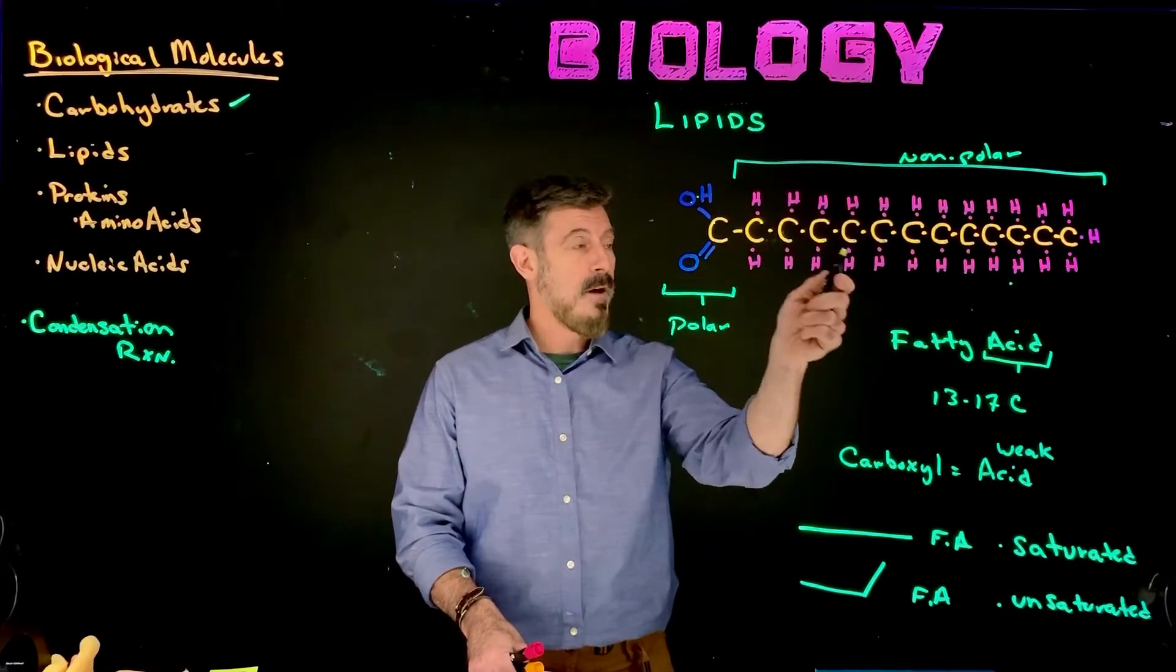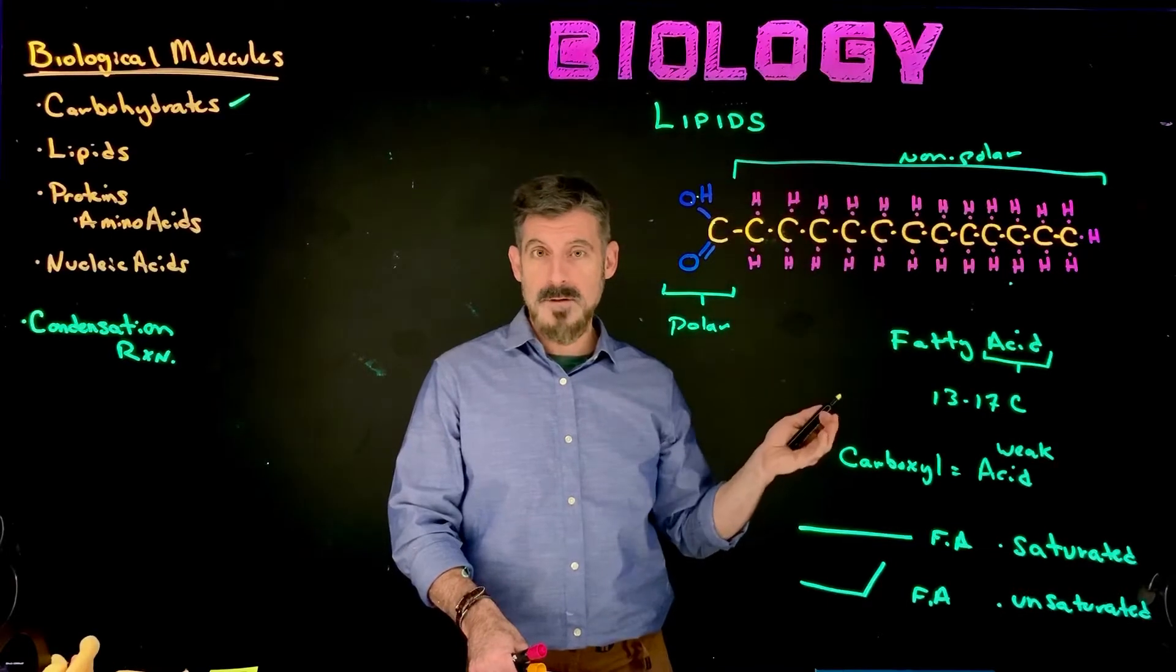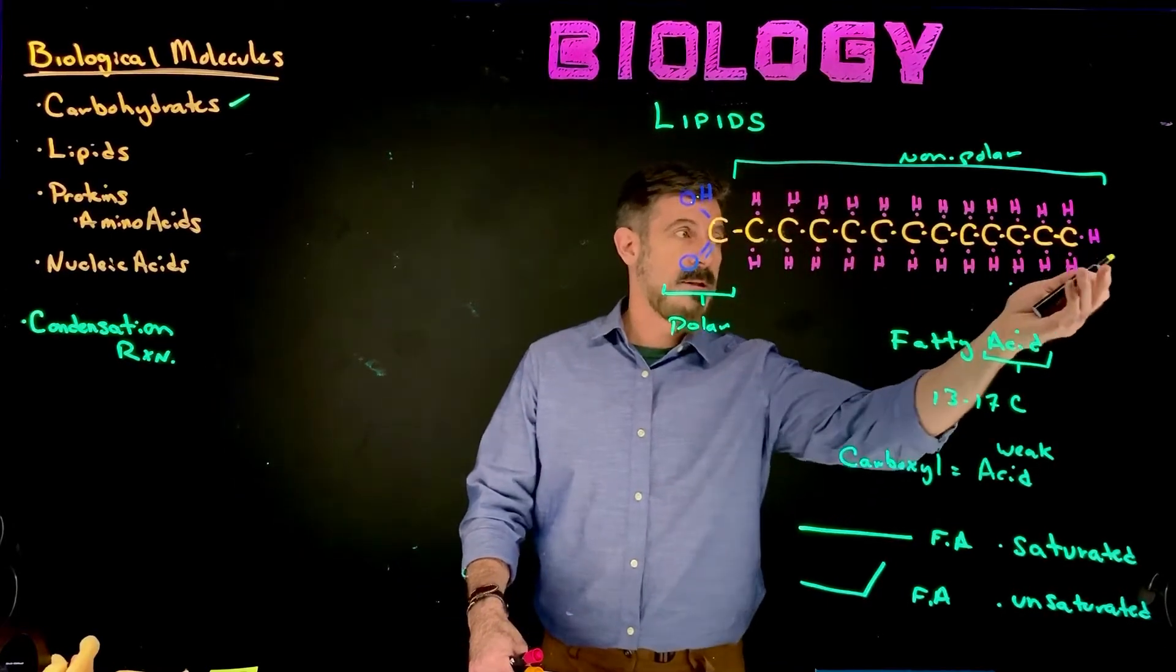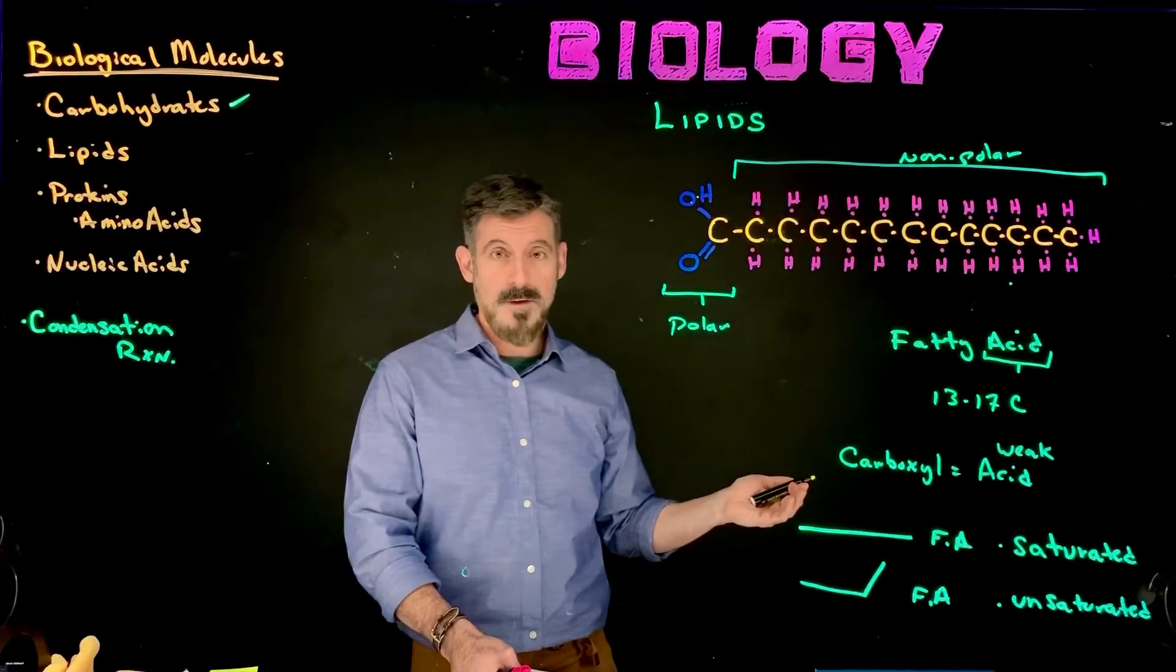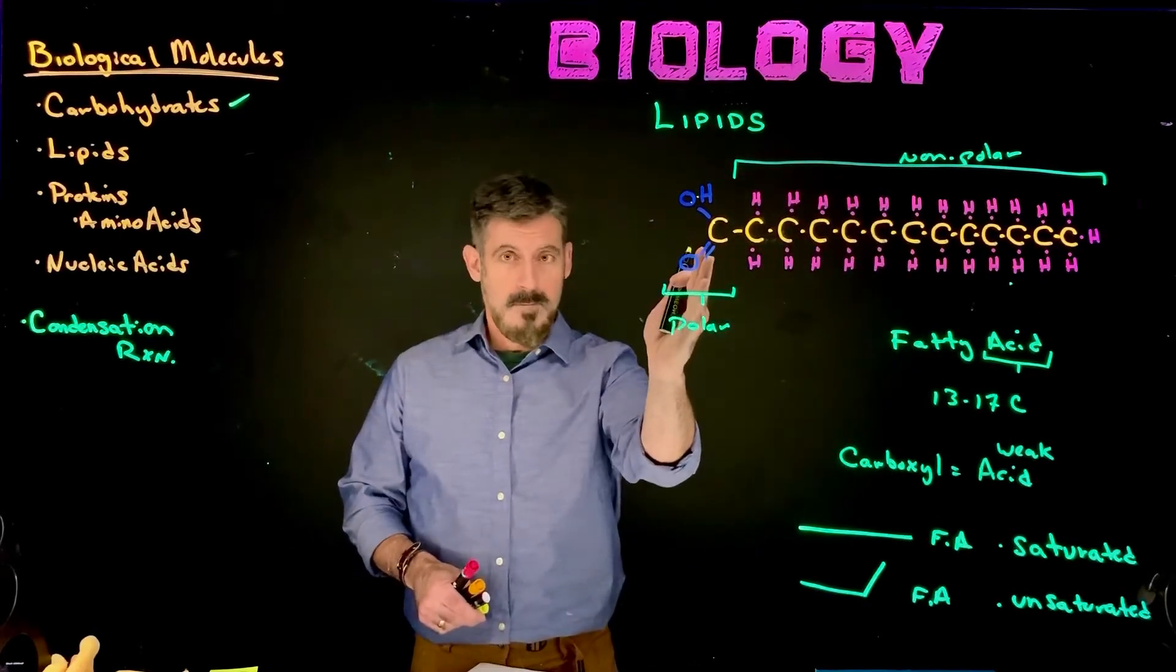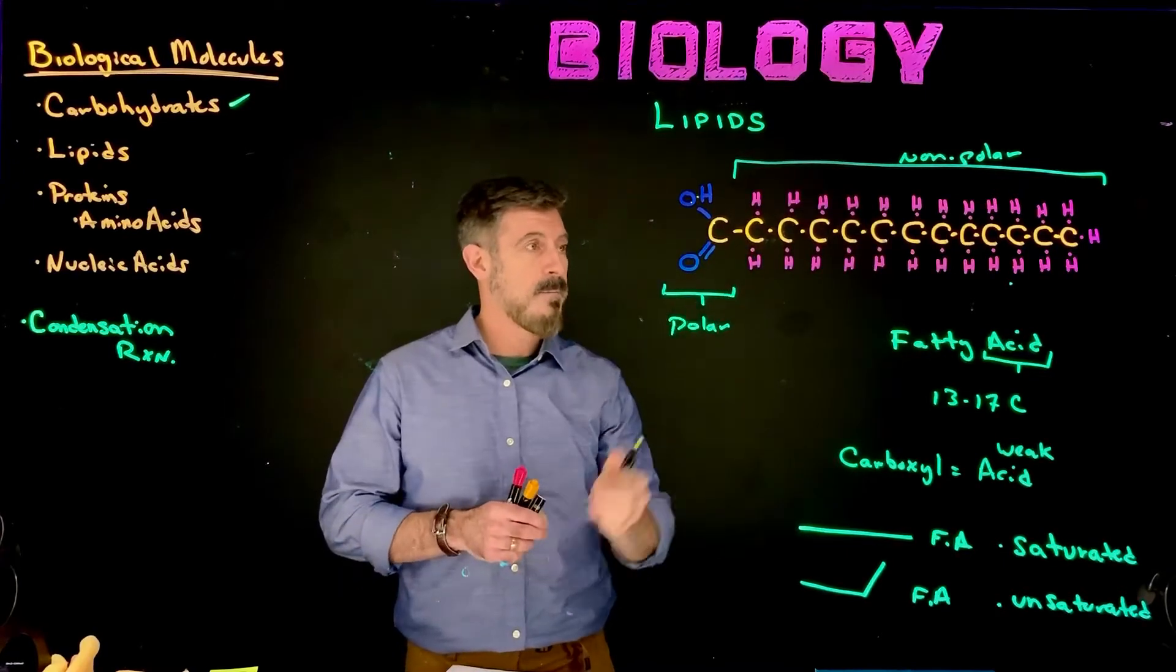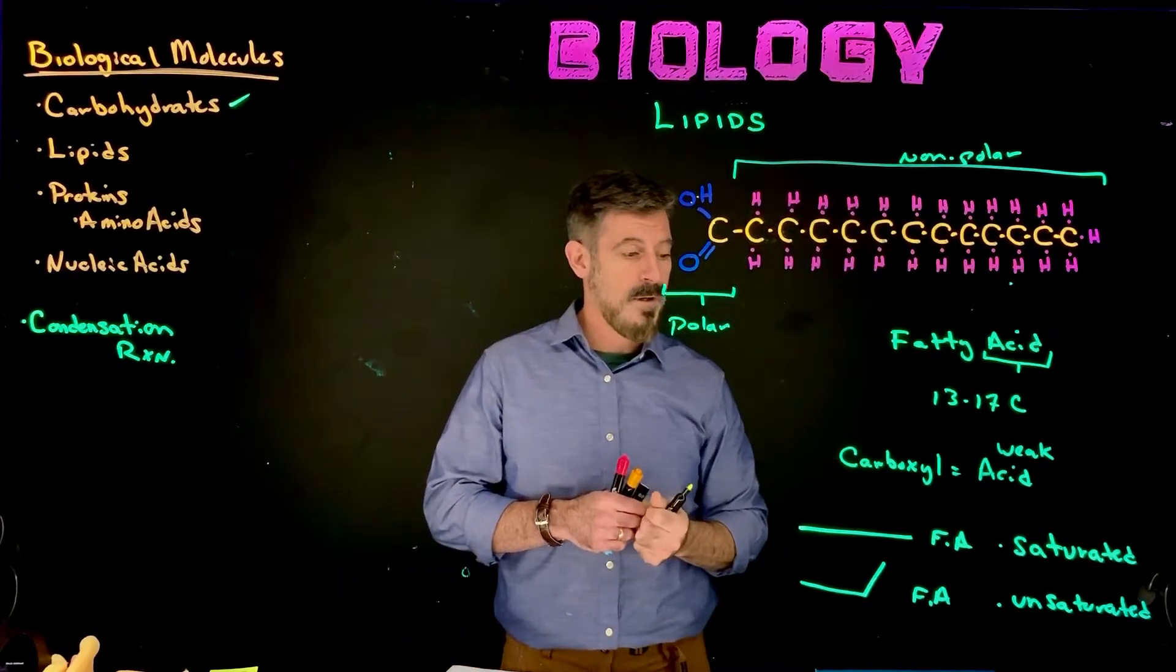A saturated fatty acid is saturated with hydrogen. So that means, essentially, every carbon has the maximum number of hydrogens that it can possibly hold. So all of them in this chain have two, except for the one on the end, which has the third. And then there's the carboxyl group, which is different, because that has the oxygen. But for all the others, these are the ones we're talking about.